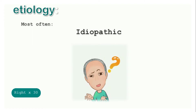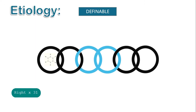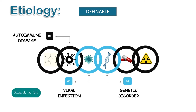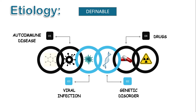In most cases, the etiology of aplastic anemia is idiopathic or without apparent cause. The definable causes of aplastic anemia include autoimmune disease; genetic disorder, such as Fanconi anemia; viral infection, such as parvovirus, hepatitis, and Epstein-Barr virus; drugs such as chemotherapeutic agents, anti-seizure, anti-inflammatory, antithyroid, and antibiotic, like sulfonamides and chloramphenicol, can destroy hematopoietic stem cells.